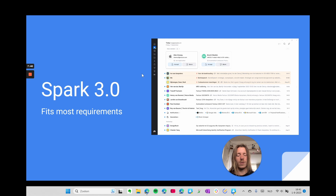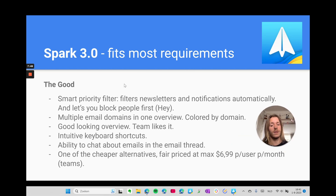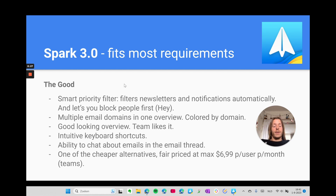Then I checked Spark 3.0, which actually fit most of my requirements. The good: it has a smart priority filter that automatically filters all newsletters and notifications — I haven't seen this done this well in other email programs. Like Hey, it lets you decide if you want to let someone email you or block them before they get into your mail. There's a multiple email domain overview colored by domain, which looks pretty nice. My team, who are Apple users, enjoyed checking it out. The keyboard shortcuts are intuitive, I can chat with teammates, and it's one of the cheaper alternatives at a maximum of $6.99 per user per month for teams — cheaper still if you're using it solo.